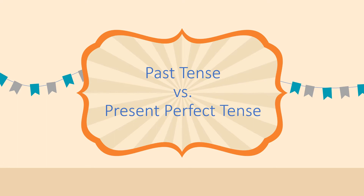From my experience teaching English, I received quite a number of questions about when to use Past Tense and when to use Present Perfect Tense. As you know, Past Tense is used to talk about something in the past, and we also use Present Perfect Tense to talk about things in the past. But there is a very clear difference between these two types of tenses. Let's look at the differences.